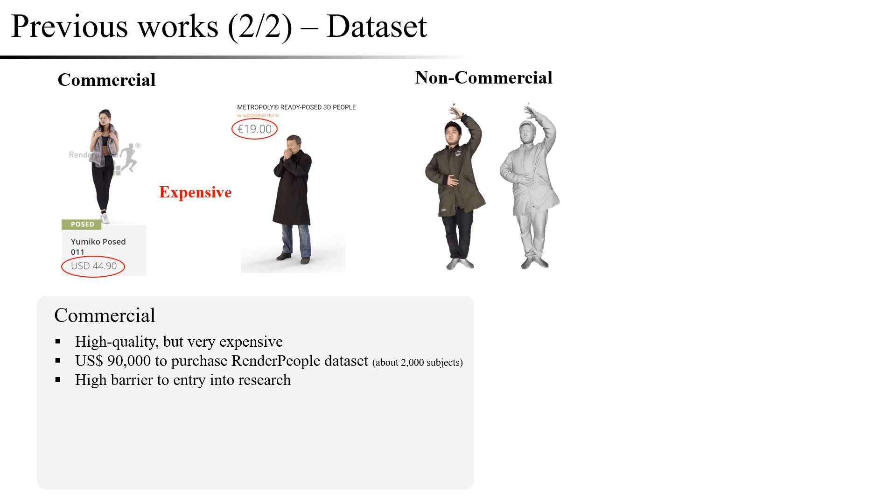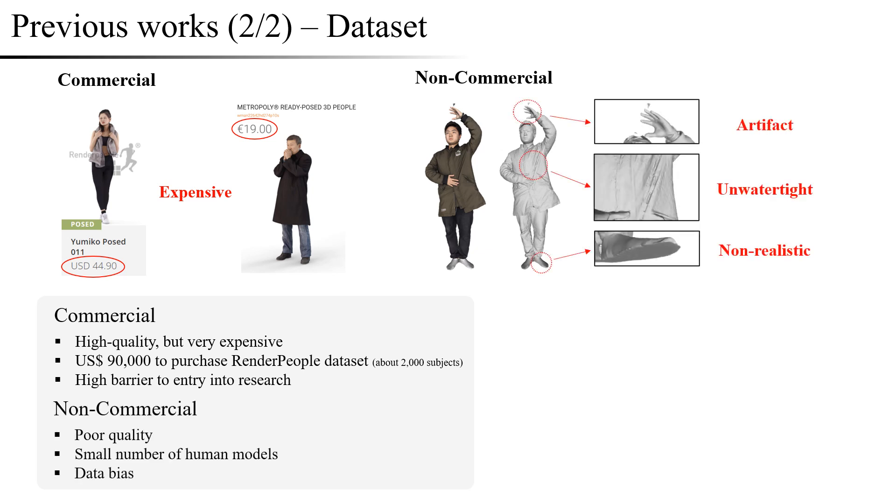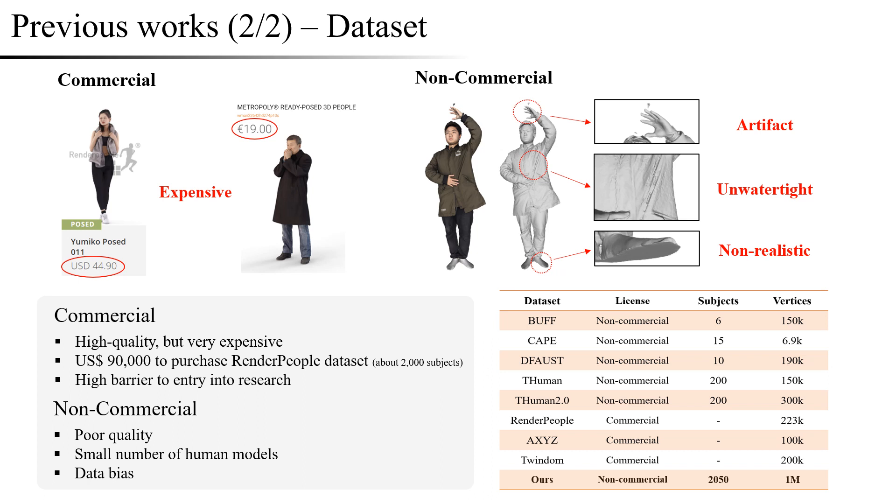Non-commercial datasets exist, but they have artifacts in the mesh or rough surface, and show shapes that are different from real human objects. Moreover, the number of objects is small, and most of the models are composed of adult male students, leading to a bias in the dataset. To summarize the currently available datasets, all of them have the aforementioned shortcomings.